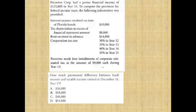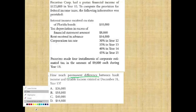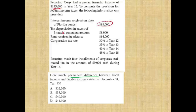How much permanent differences between book and taxable income exist as of year 2013? P has pre-tax financial income of $125,000. Items include: interest income received on the state of Florida bonds — $18,000, that's permanent. Tax depreciation in excess of financial statements — that's temporary. Rent received in advance — temporary. The answer is $18,000 — only the Florida bond interest is a permanent difference.